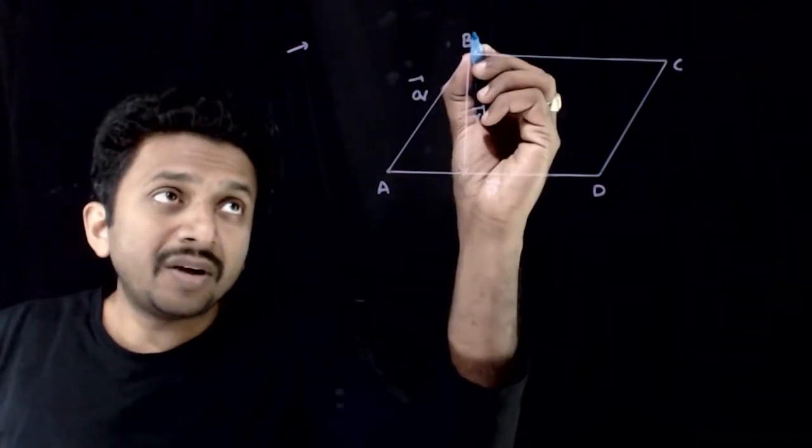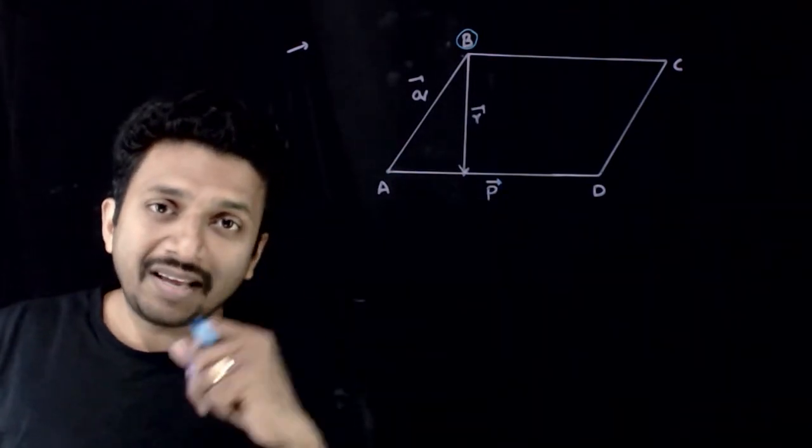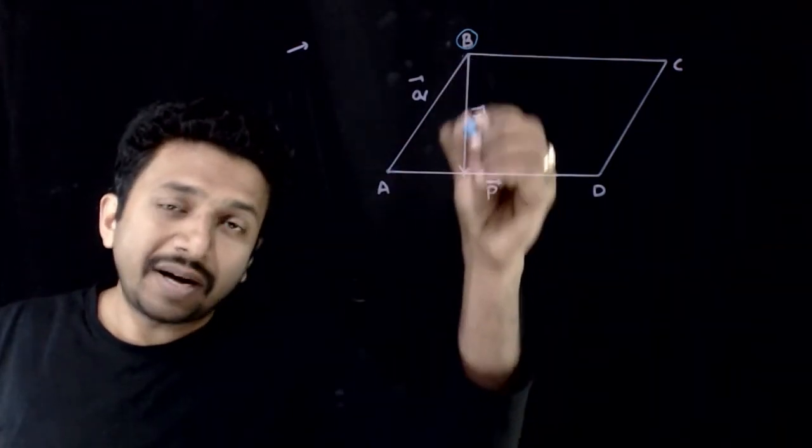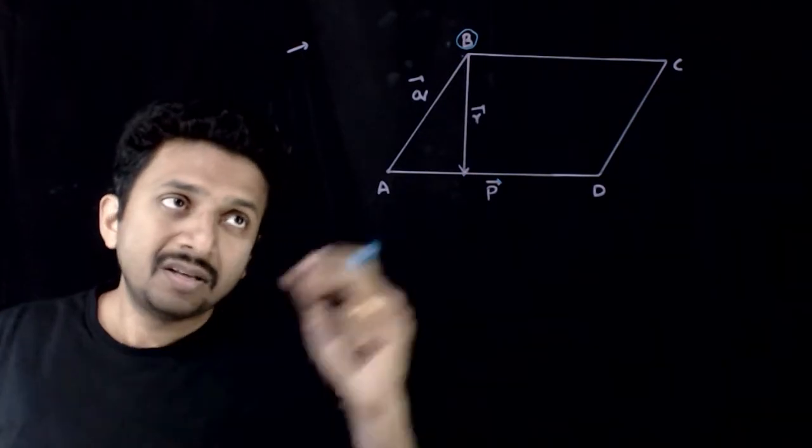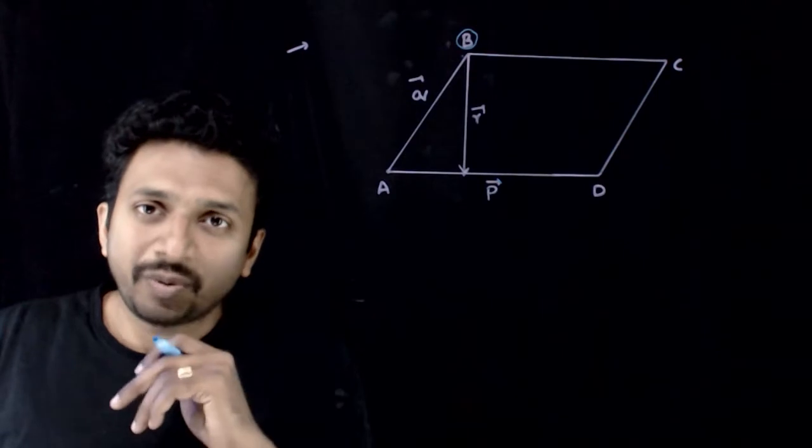And from the vertex B, an altitude is dropped to the side AB and this vector is nothing but R bar. So if that is so, what is R bar in terms of P bar and Q bar?